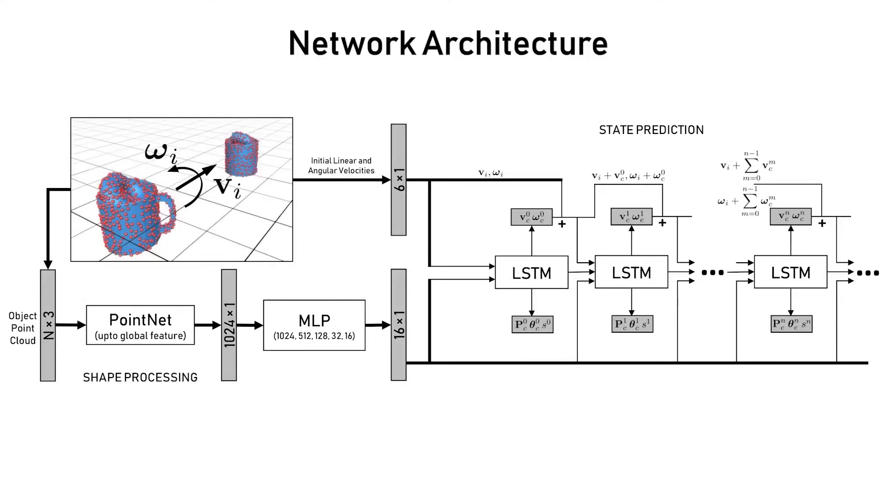We use these observations to design a neural network architecture with two main parts. The shape processing branch aims to learn salient shape features that are crucial to making accurate predictions. The state prediction branch is responsible for predicting the change in state at each time step based on the extracted shape features and the input velocities.